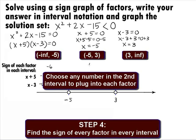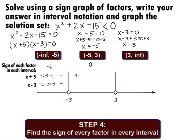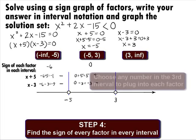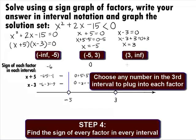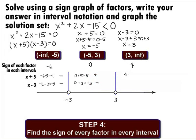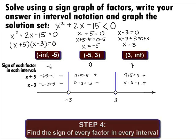Moving to the second interval of negative 5 to 3, let's choose 0. This gives us 0 plus 5 equals 5 for the first factor, which means that factor is positive. Plugging 0 into the second factor gives 0 minus 3 equals negative 3, so that factor is negative in the second interval. For the last interval of 3 to infinity, let's choose 4. Plugging into x plus 5 gives 4 plus 5 equals 9, which is positive. Plugging 4 into x minus 3 gives 4 minus 3 equals 1, so that factor is also positive in the last interval.